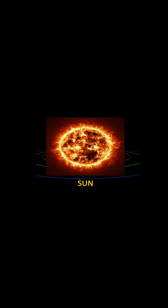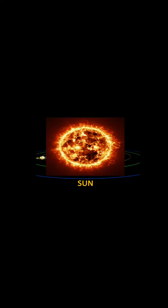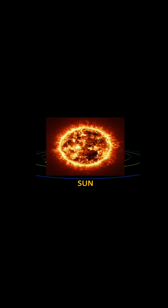You can see the diagram of the Sun here. The Sun is at the center of the solar system. The size of the Sun is 13 lakh times that of the Earth. It is the nearest star to the Earth and it is the ultimate source of energy for life on Earth.